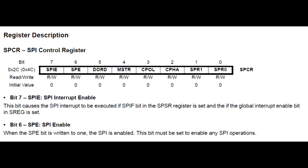The last register is the SPI control register at memory location hex 4C in RAM. Bit 6 enables or disables the SPI function. Bit 5 is the data order — either the least significant bit or the most significant bit is shifted out first. Bit 4 sets master or slave mode. Bit 3 is clock polarity when idle, bit 2 is clock phase, and bits 0 and 1 set the clock rate — how fast the clock will shift out the data.